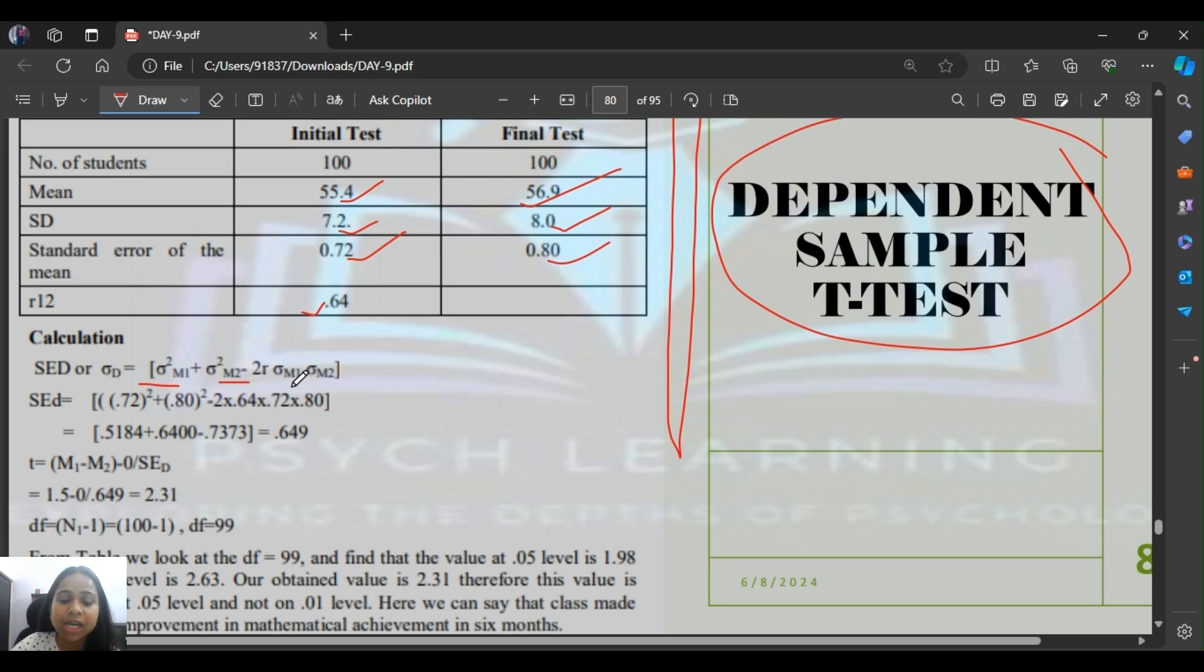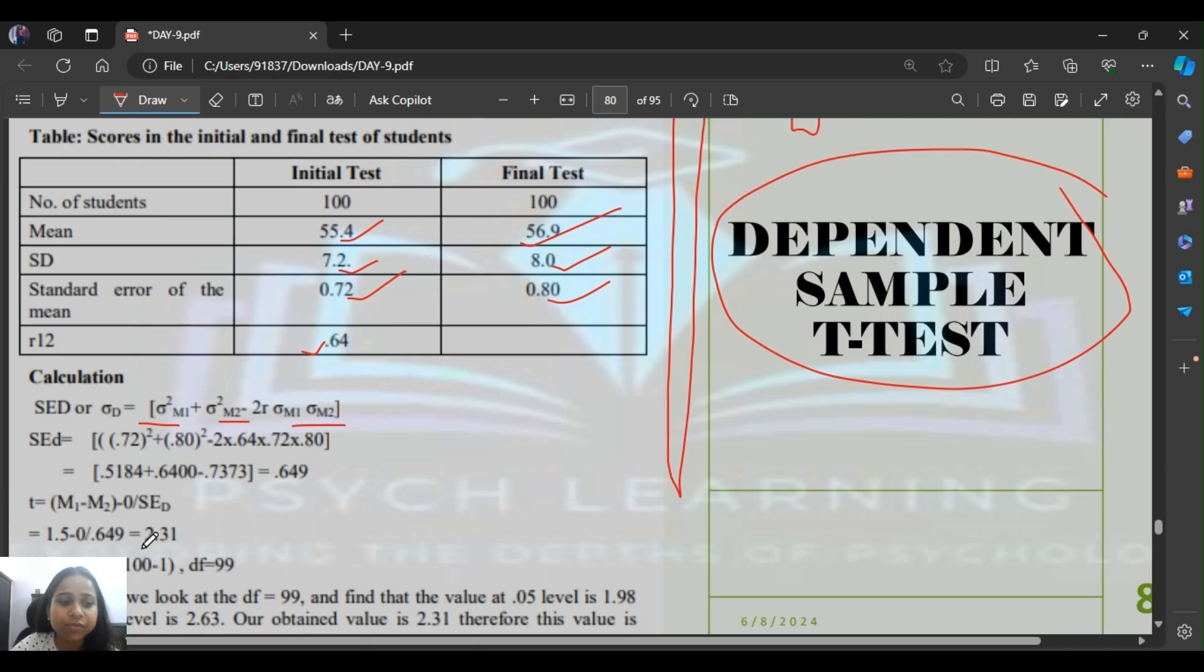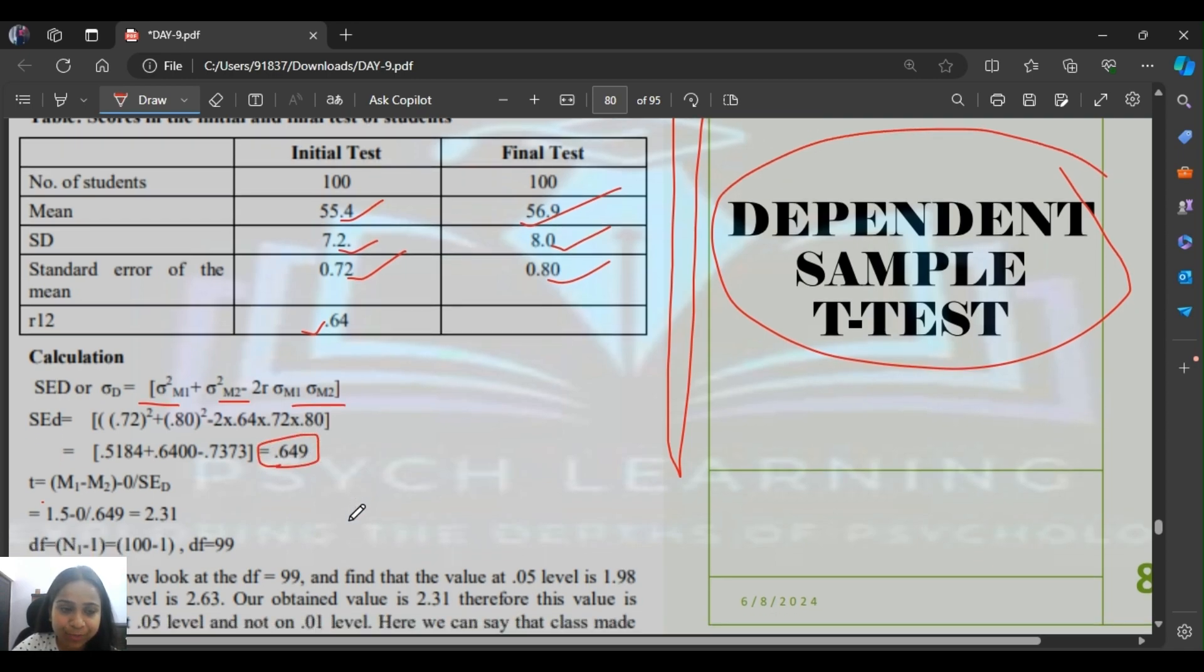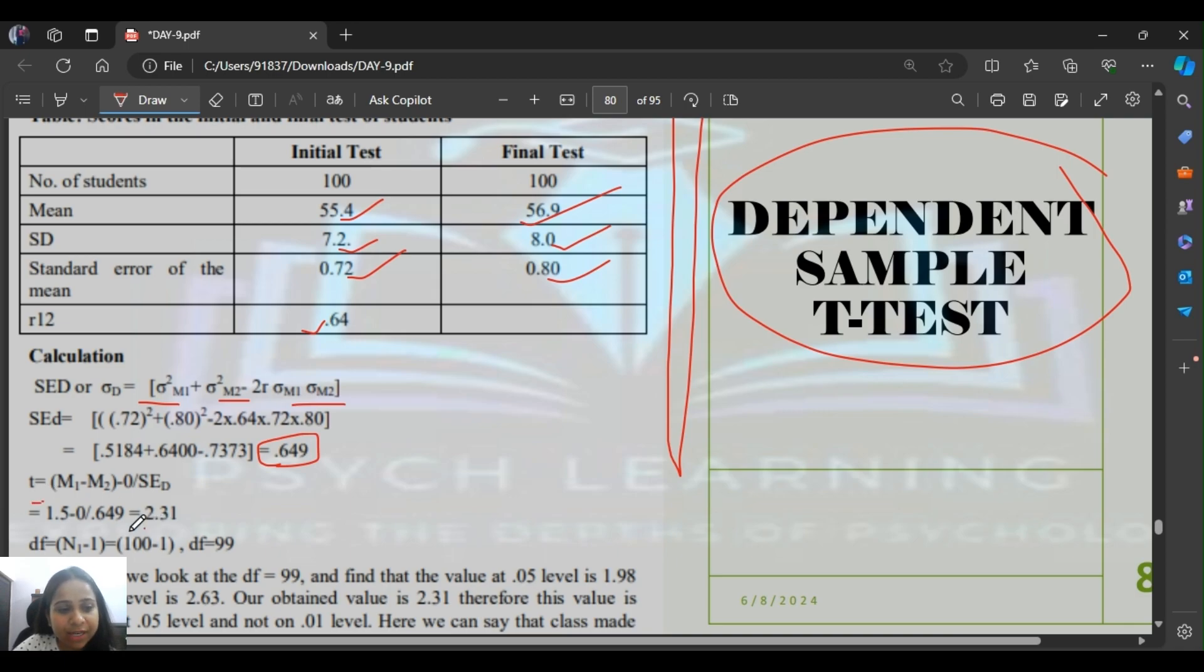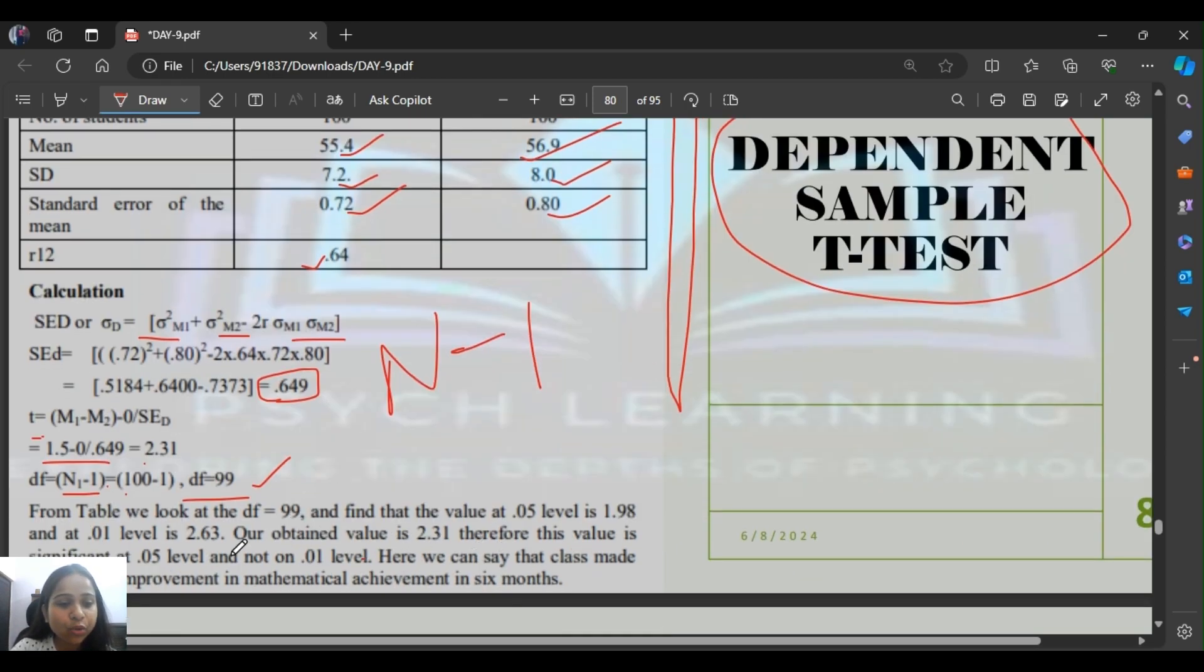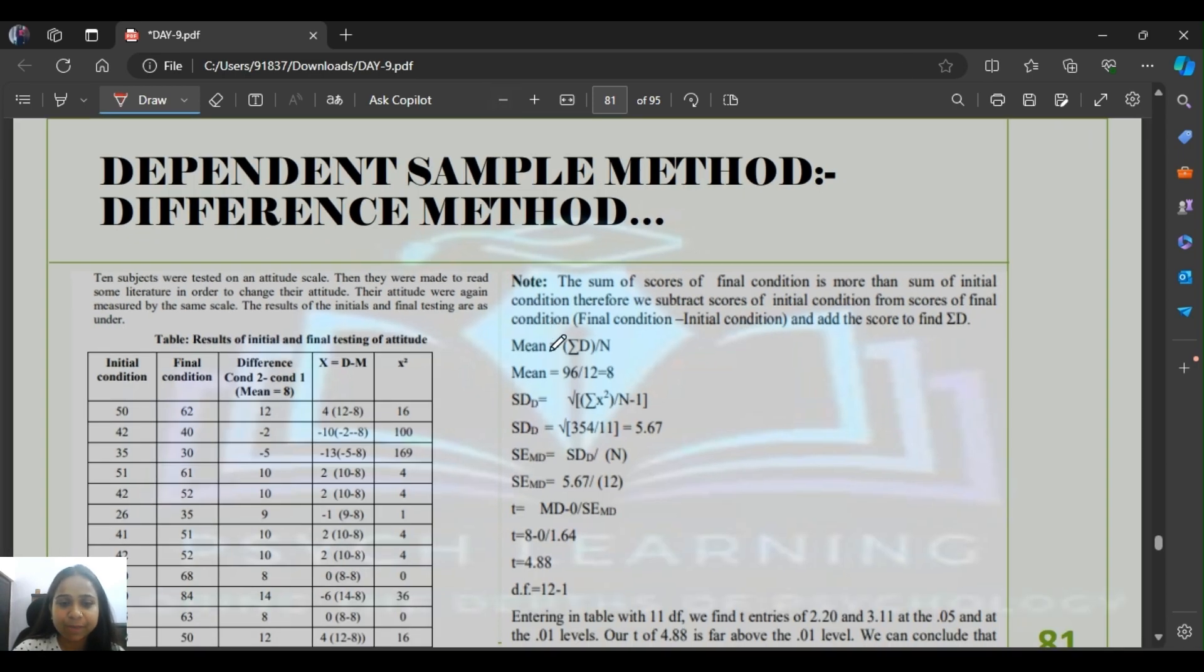Then you calculate standard error of mean: standard deviation squared divided by n minus 2r. Since these values are given, it's very easy. You get standard error and apply the same formula as before. You get 2.311. Degrees of freedom is n minus 1 because there's only one population. So 100 minus 1 is 99 degrees of freedom. Checking the table value of 2.6, our value is 2.3, so you can say there is no significant impact.